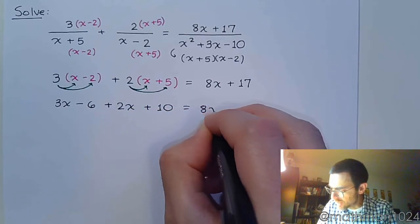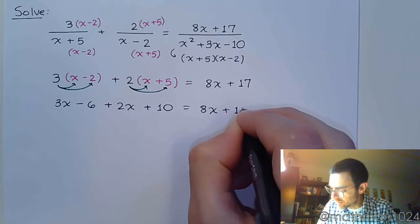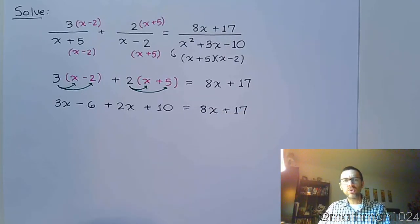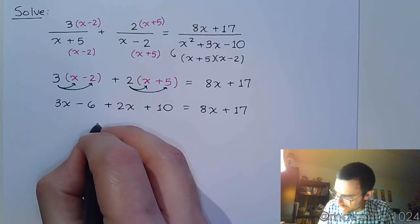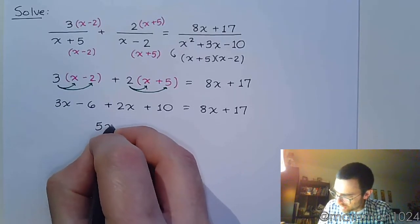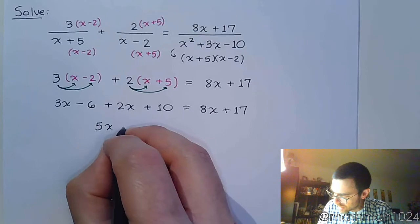And on the right side, again, it's just 8x plus 17. So I hope you guys can see that this is going to be a linear equation. We don't have any powers. It's just x, right? x to the first if you want to be that way. So let's combine like terms and see what we have. So 3x plus 2x, we have 5x. Negative 6 plus 10 is positive 4.